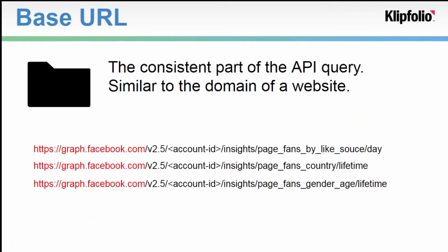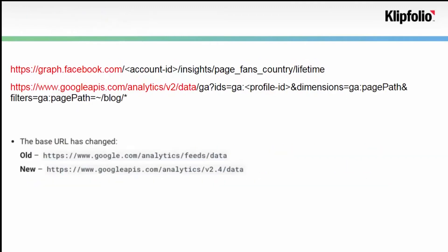Next is the base URL. This is the consistent part of the API query, similar to the domain of a website. You can think of APIs as having a very similar folder-like structure to domains and URLs. In these examples, you can see I'm accessing different information from the Facebook API, but the base URL is always the same. The base URL isn't always just the part up to the .com either — take a look at this example from the Google Analytics API. In this case, the base URL is googleapis.com/analytics/v2.4/data, where v2.4 specifies the version of the API you're making a call against.